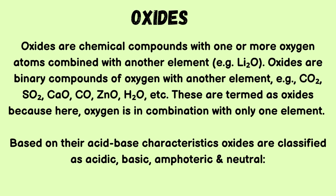The next subtopic is oxides. Oxides are chemical compounds with one or more oxygen atoms combined with another element — they are binary compounds of oxygen with another element. Examples include carbon dioxide, sulfur dioxide, calcium oxide, carbon monoxide, zinc oxide, and water. Based on their acid-base characteristics, oxides are classified as acidic, basic, amphoteric, and neutral.